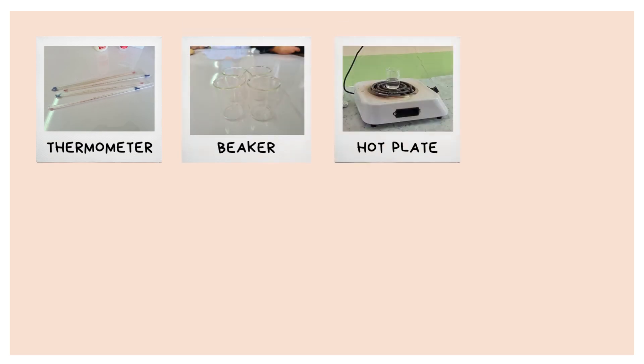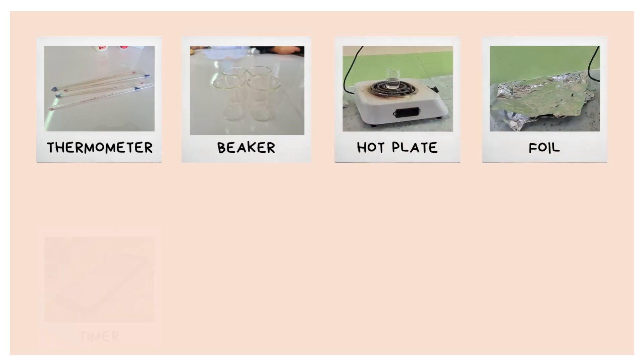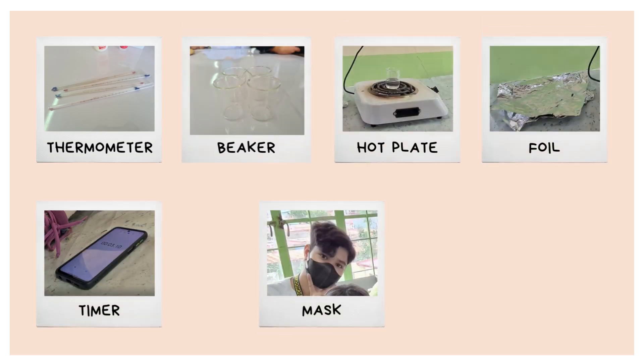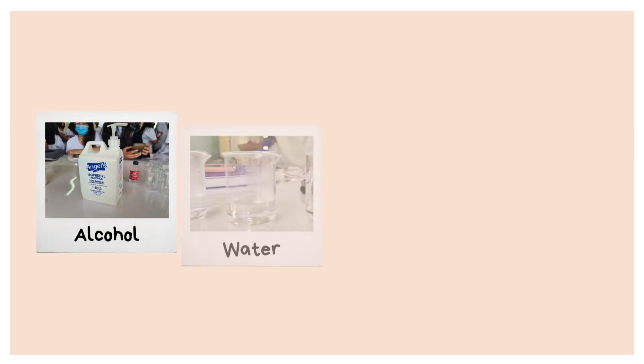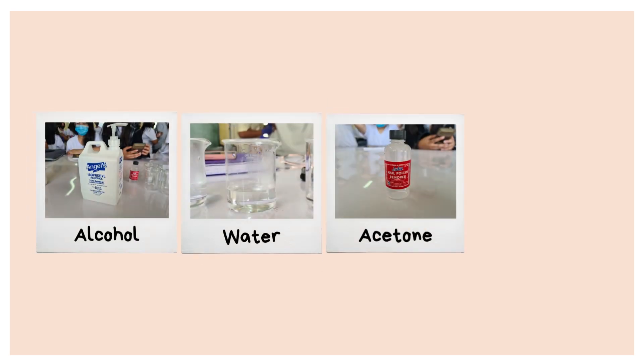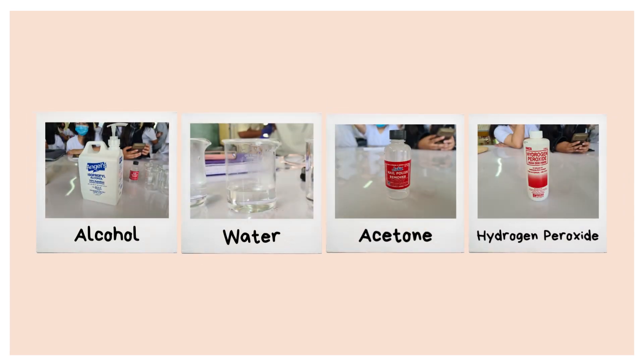For the materials that will be used in the experiment, we have a thermometer, beaker, hot plate, foil, timer, mask, lab gown, and of course the four liquids that will be used in the experiment, which are alcohol, water, acetone, and hydrogen peroxide.